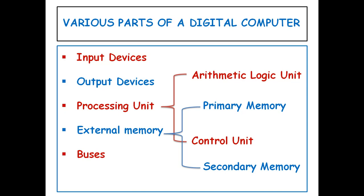Input devices are devices using which the user provides input. In a programmable computer, input devices are also used to input programs. Examples of input devices are keyboards and mice. Output devices notify the user about the outputs of computation — examples include the screen and printer. The central processing unit is the brain of the computing device and performs the basic processing steps. A CPU typically consists of an arithmetic logic unit and a control unit. The arithmetic logic unit provides the basic operational units of the CPU, while the control unit is responsible for controlling the flow of data and instructions.